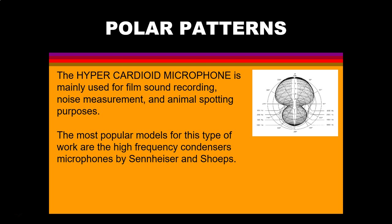The hypercardioid pattern is used for film sound recording, noise measurements, and animal spotting purposes. The most popular models for this type of work are the high-frequency condensers by Sennheiser and Scheps. The hypercardioid is used in film and sound recording to keep the microphone out of the view of the camera. Since they're very sensitive in front, they will pick up sounds as though the microphone were much closer than some of the earlier patterns.